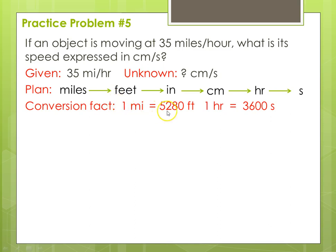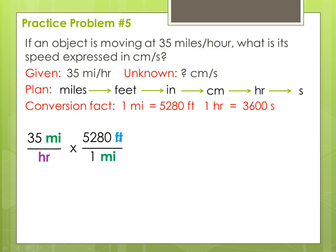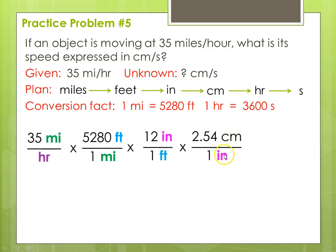Conversion facts: one mile is 5,280 feet — I'll give that to you. One hour is 3,600 seconds — that's 60 times 60, because there are 60 minutes in an hour and 60 seconds in a minute. Starting with our given, 35 miles per hour, we multiply by our first conversion going from miles to feet: feet in the numerator, miles in the denominator. Then feet to inches: inches in the numerator, feet in the denominator. Then inches to centimeters: centimeters in the numerator, inches in the denominator. Finally, hours to seconds: hours must be in the numerator to cancel, and seconds will be in the denominator — which is where it ends up.